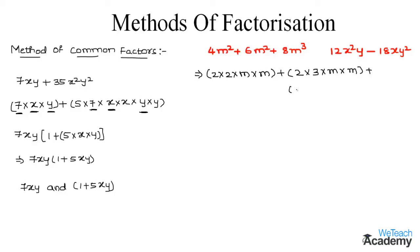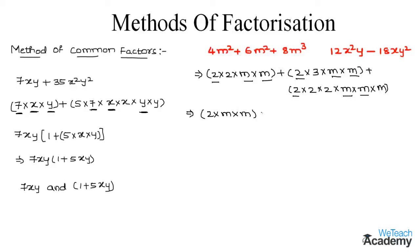We can write the last term 8m³ as 2 × 2 × 2 × m × m × m. Now marking the common factors, we get 2, m, and m. Taking these out as the common factor gives us 2 × m × m × (2 + 3 + 4m), which implies 2m² × (5 + 4m) as a factor of the given expression.